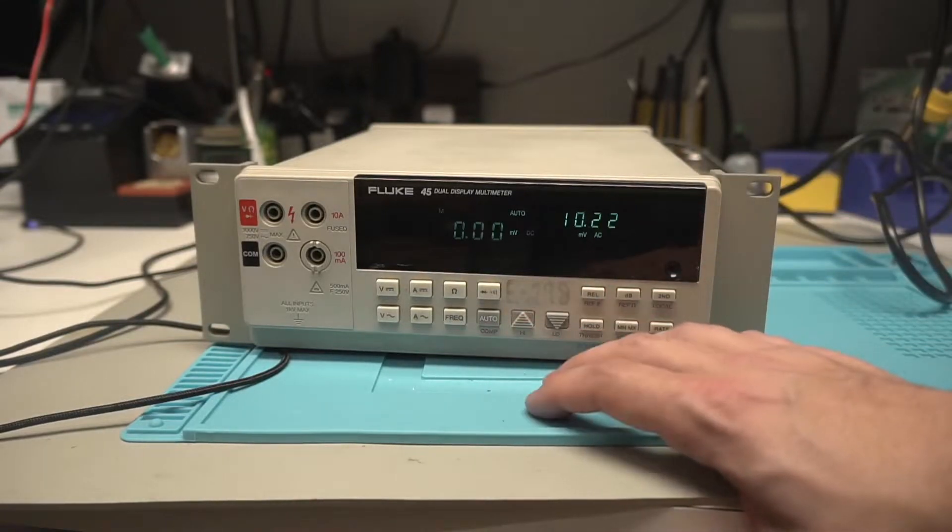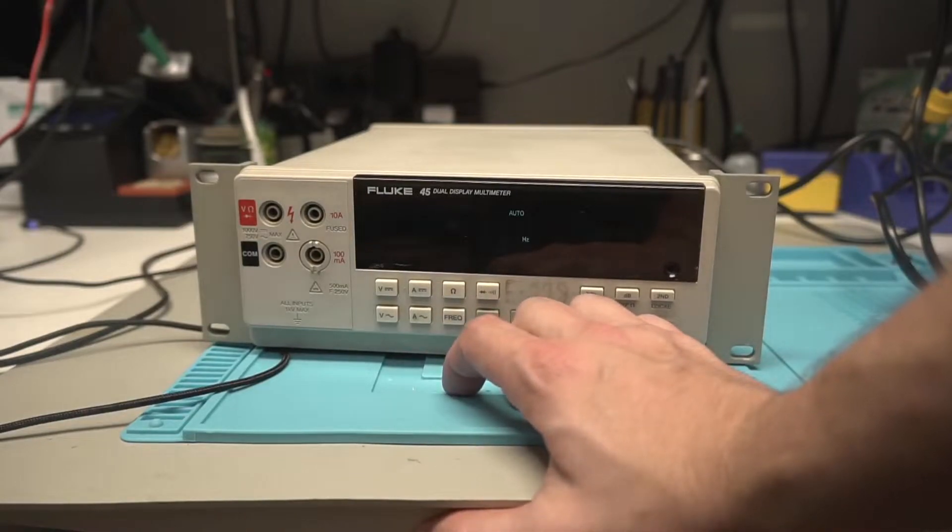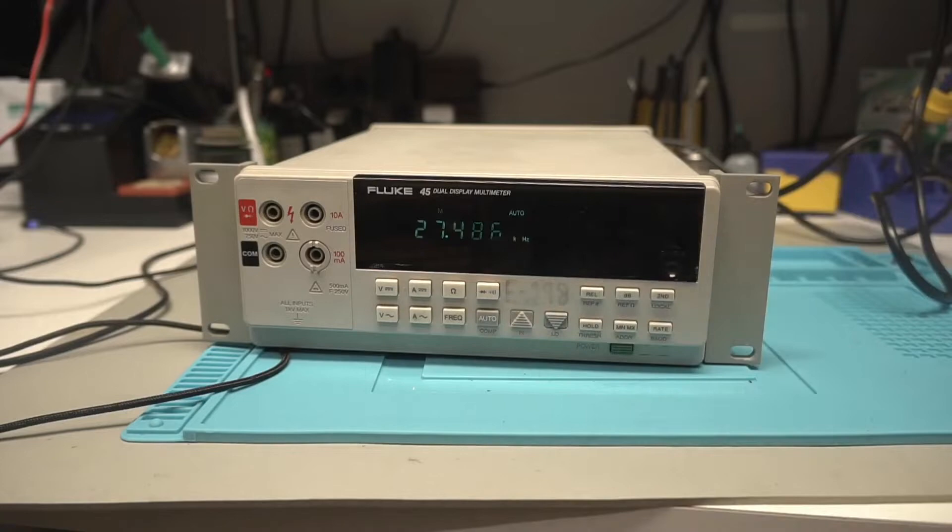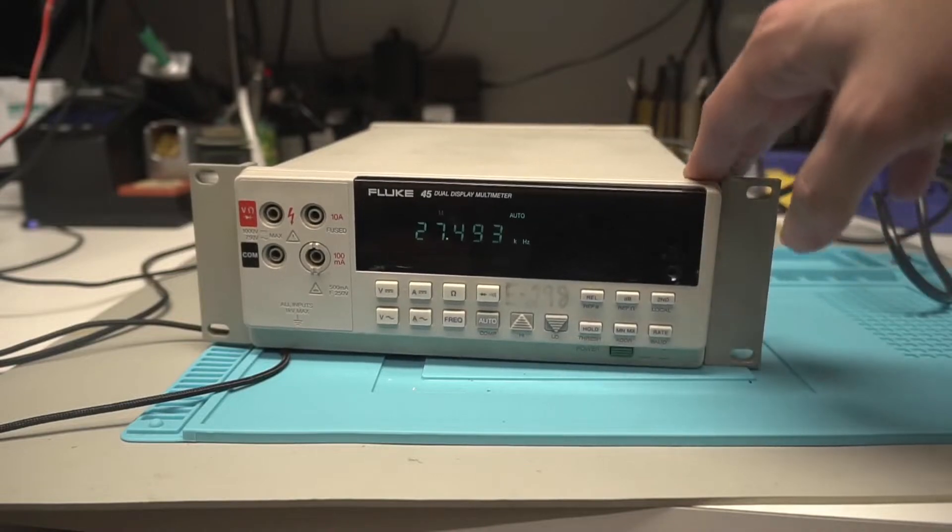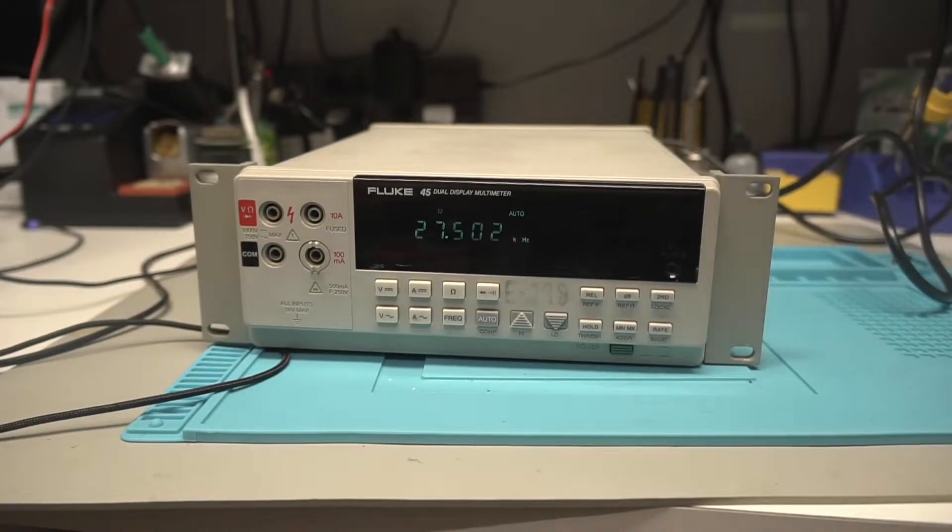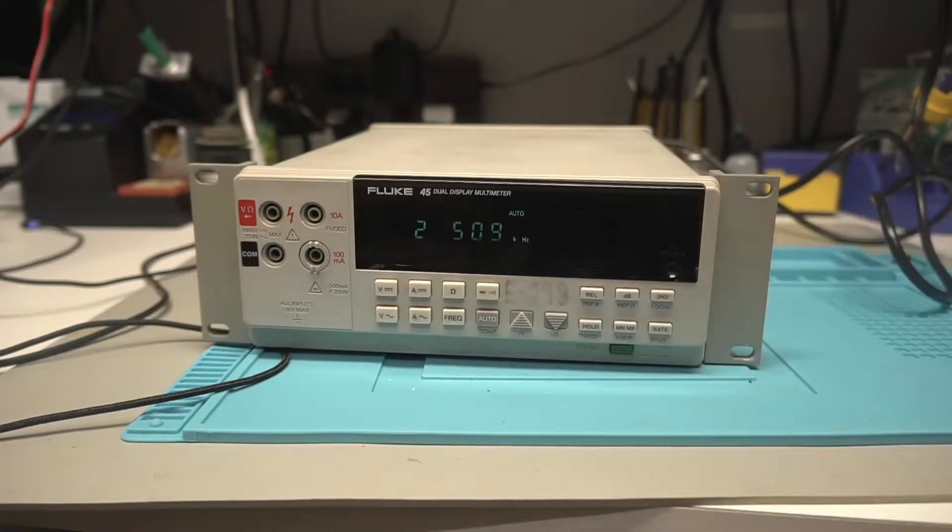The last feature I really want to show on here before we tear this thing down is we also can read the frequency too. So that's a nice little feature that we can use when working on power supplies and stuff. I think this will only go up to like a hundred kilohertz though, so it's not a super high frequency. It reads accurately, but it does read frequency on there. So it is useful, especially when troubleshooting power supplies.